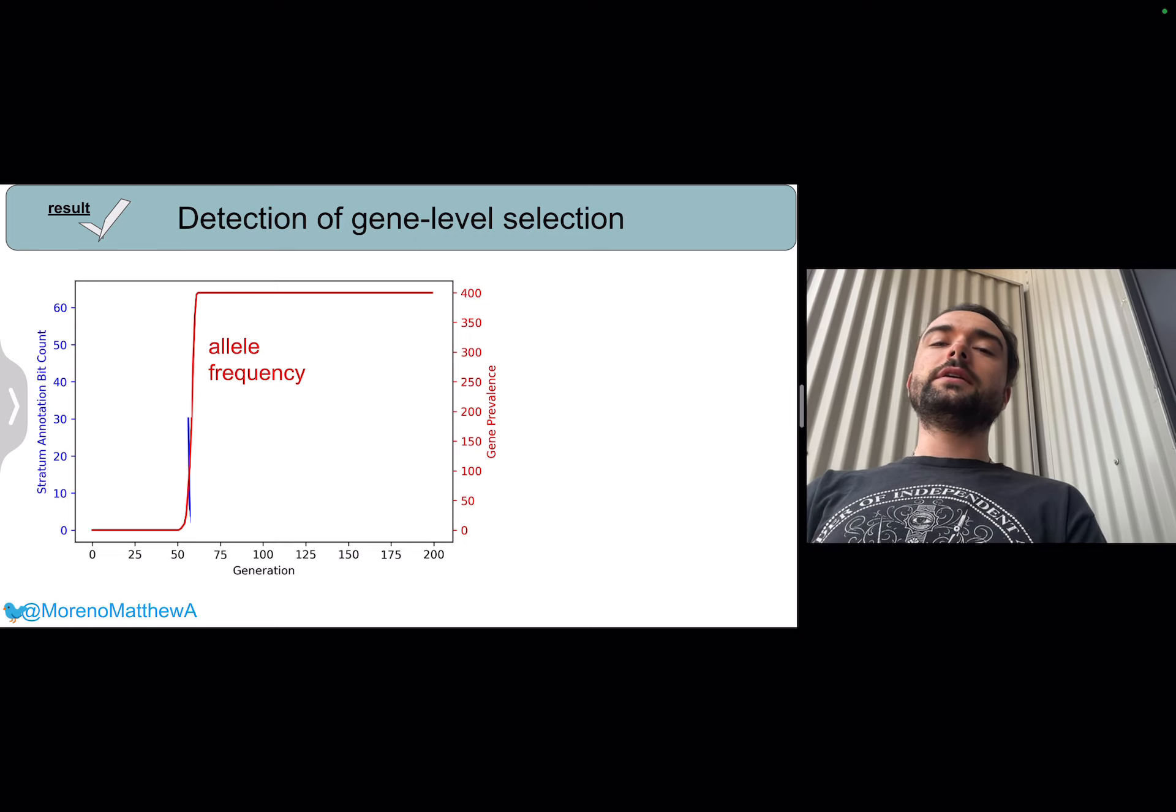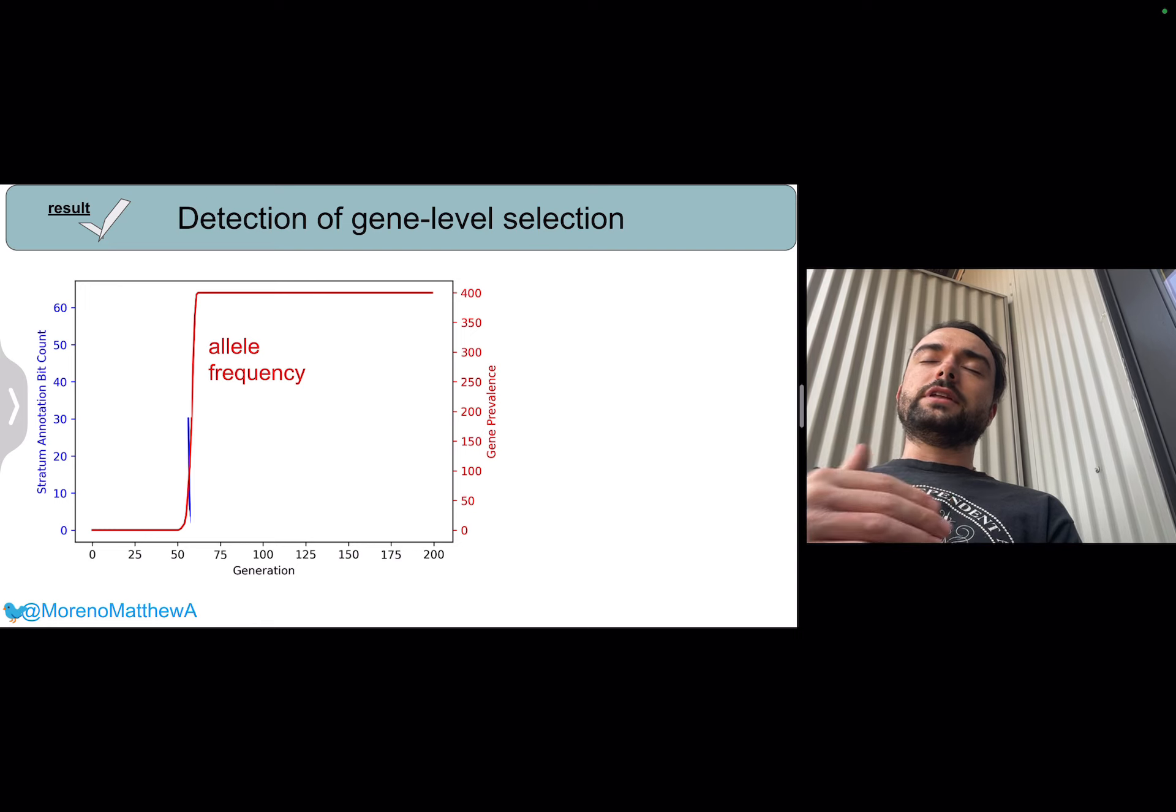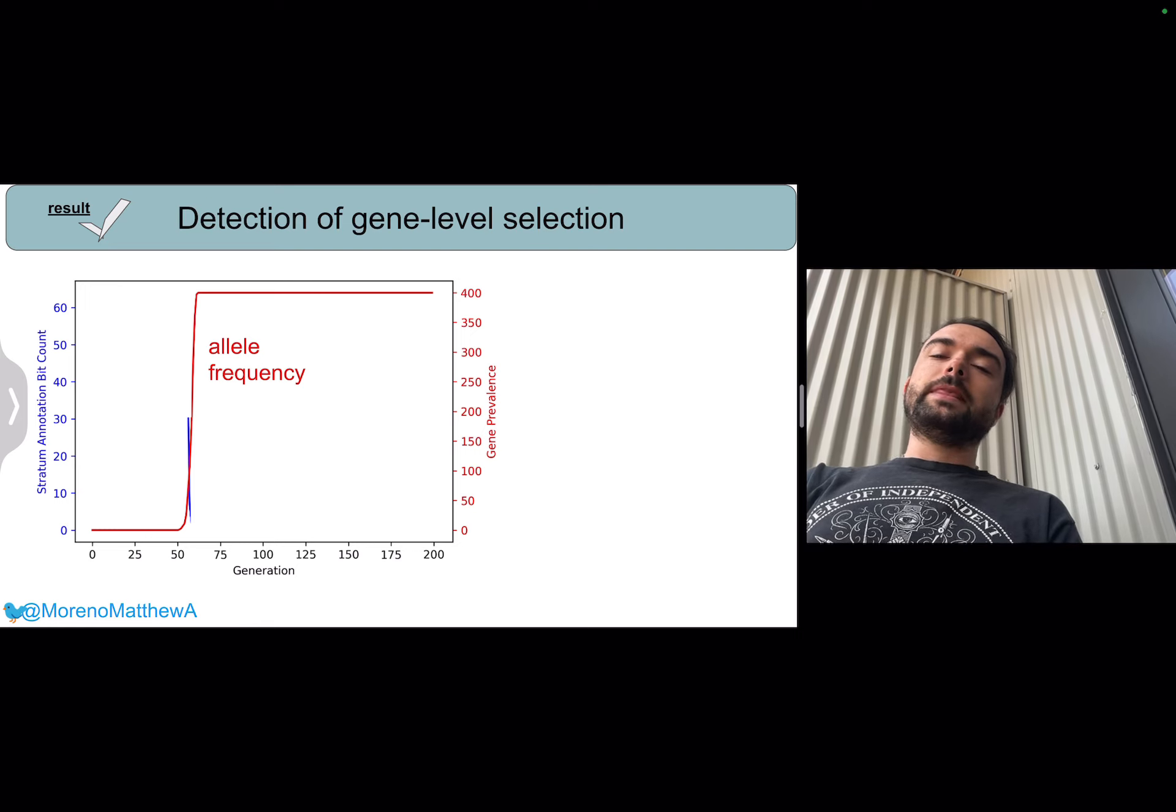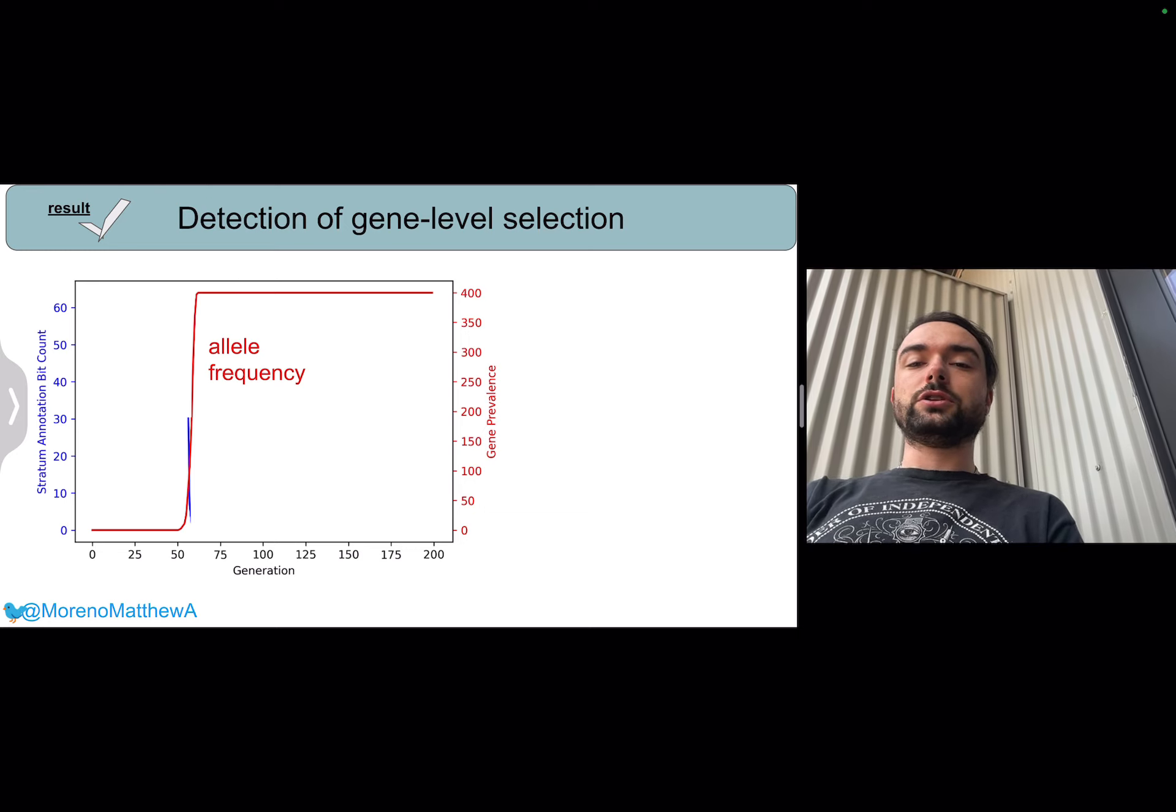Very briefly, this is what the signal from this system looks like. We introduced a new allele that had a selective advantage at generation 50, and it increased in frequency, very quickly sweeping the population, going from just one copy up to 400 copies in this particular population.